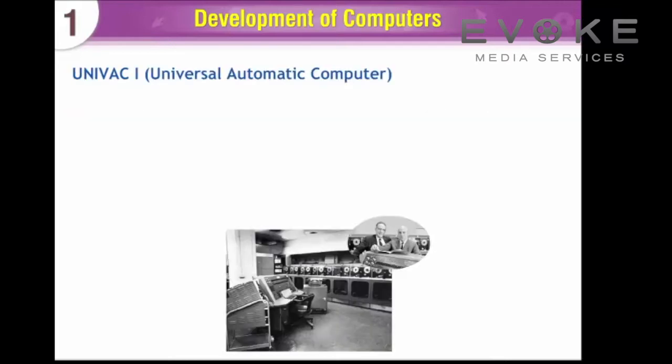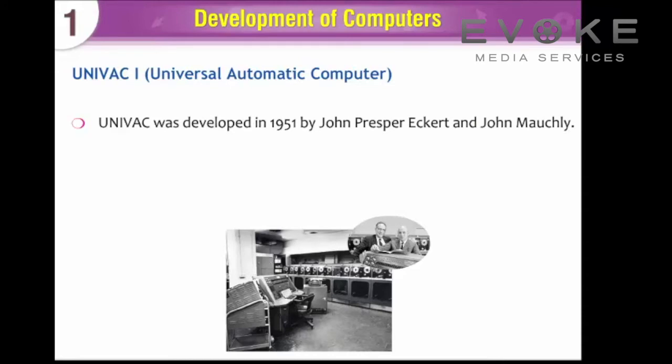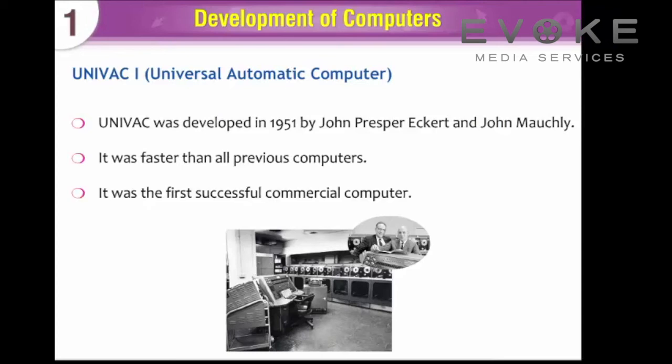UNIVAC 1. UNIVAC 1 — Universal Automatic Computer — was developed in 1951 by John Presper Eckert and John Mauchly. It was faster than all previous computers and was the first successful commercial computer.